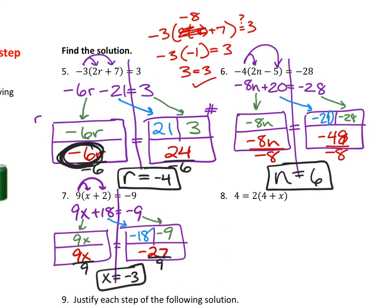Now number 8 we're going to do together, because I know a lot of times when the variable is not on the left side, that students panic. But fear not, the box method allows you not to panic, because I don't have to change anything about what I do. I can still start with distribution. 2 times 4 is 8. 2 times positive x is positive 2x.